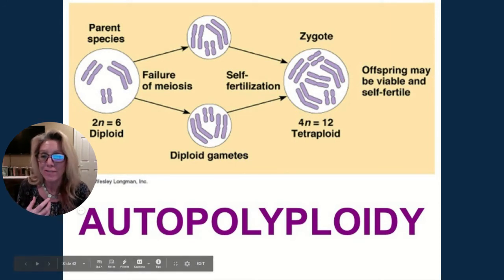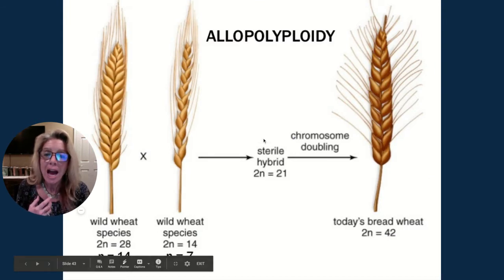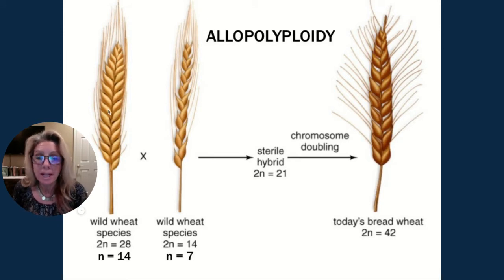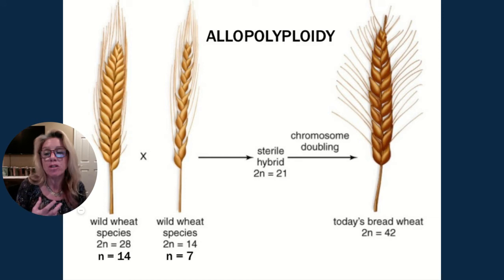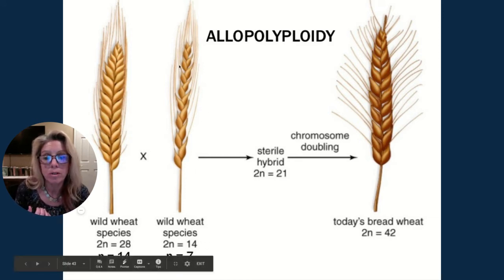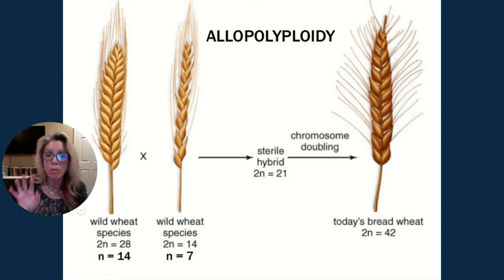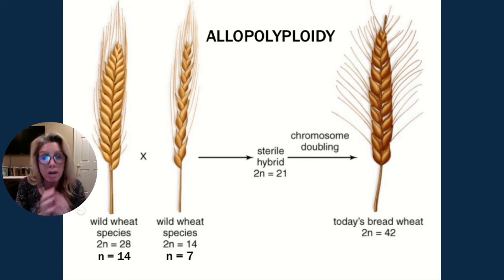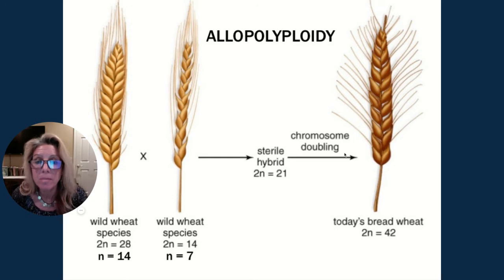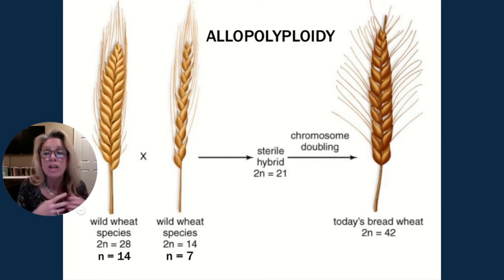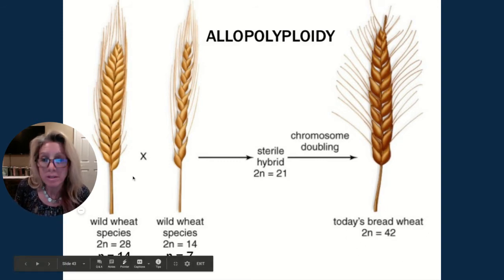Allopolyploidy involves two different but related species. Wild wheat species one has a diploid number of 28, so its haploid gamete has 14 chromosomes. A second wild wheat species has a diploid number of 14, haploid number of 7. A gamete with 14 and one with 7 form a zygote — normally a sterile hybrid, which is a post-zygotic isolating mechanism. But in plants, if the chromosomes double, forming homologous pairs, a viable species that can undergo meiosis can form.